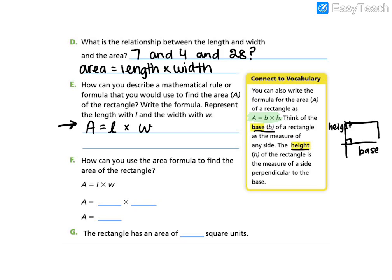Okay, so now we need to use the area formula to find the area of the banner. The length was 7, the width was 4. We know that 7 times 4 is 28. So the rectangle has an area of 28 square units.